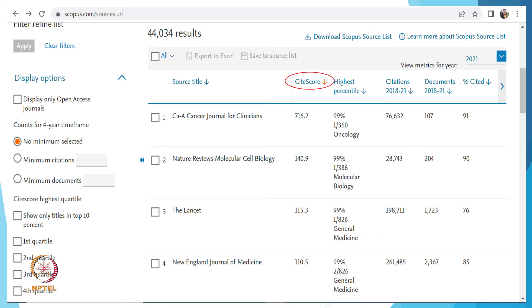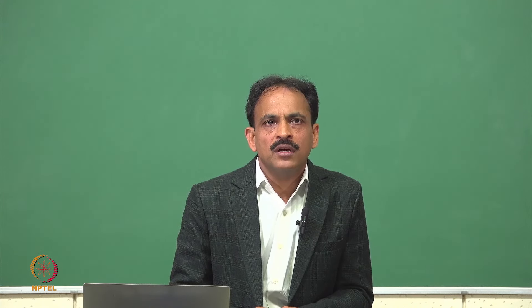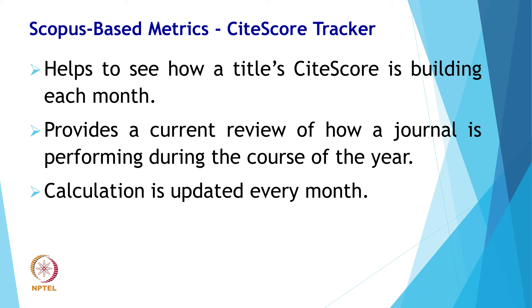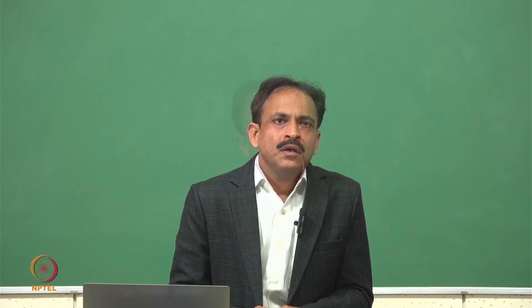CiteScore Tracker helps to see how a title's CiteScore is building each month. It provides a current review of how a journal is performing during the course of the year. CiteScore Tracker is calculated in the same way as CiteScore but for the current year rather than the previous complete years, and the calculation is updated every month.